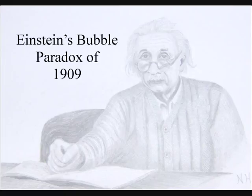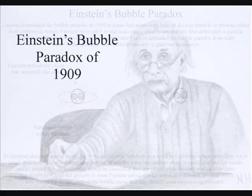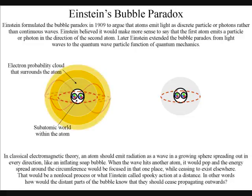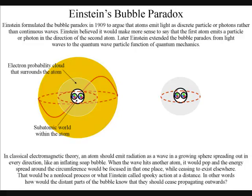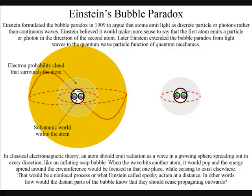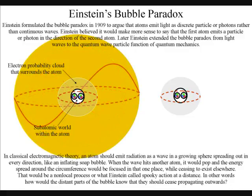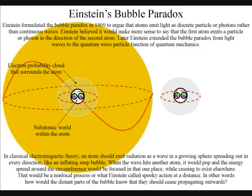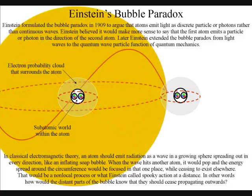Einstein formulated the bubble paradox in 1909 to argue that atoms emit light as discrete particles or photons rather than continuous waves. In classical electromagnetic theory, an atom should emit radiation as a wave in a growing sphere spreading out in every direction, like an inflating soap bubble.